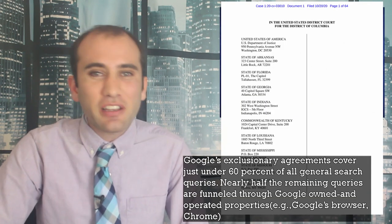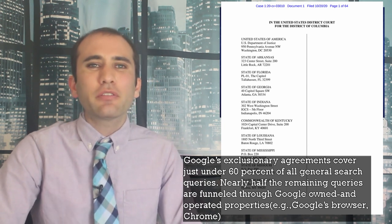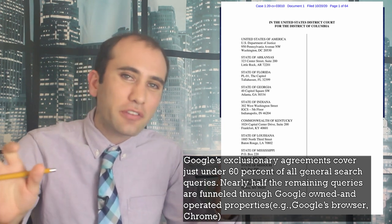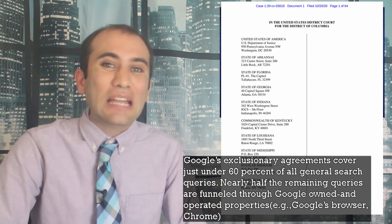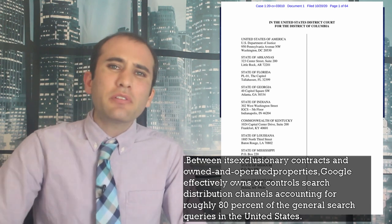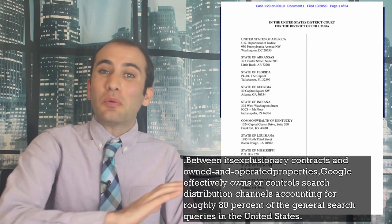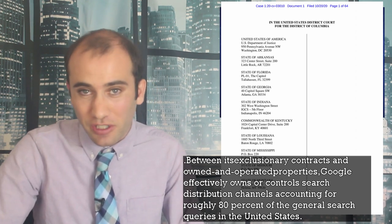The Department of Justice found that just under 60% of all general search queries were funneled through these Google is the default agreements, with another 20% going through properties directly owned by Google, like Google Chrome. Doing some basic addition, that's already 80% of all the searches coming on the heels of some level of coercion.